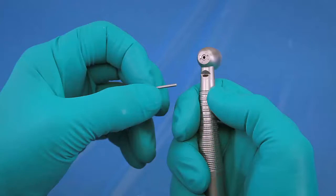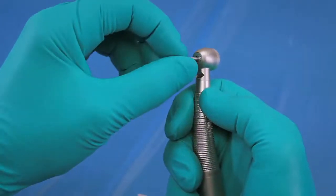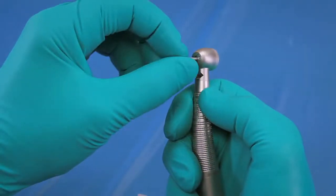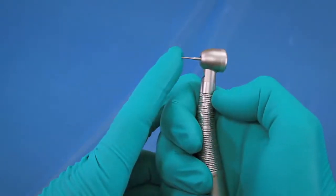Grasp the burr by the cutting end. Insert the burr into the handpiece spindle lightly until it stops. Apply light inward pressure with your index finger to the free end of the burr.